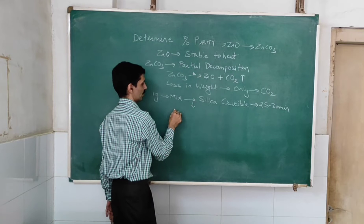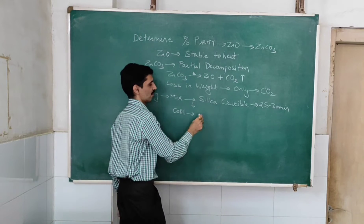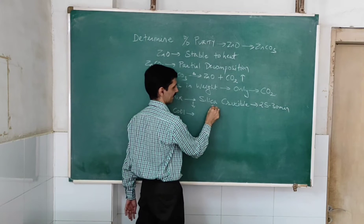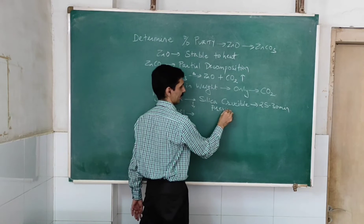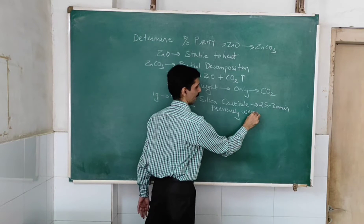Next, you need to cool the crucible. Now, this silica crucible has to be previously weighed, because weight is very important when it comes to gravimetric method.